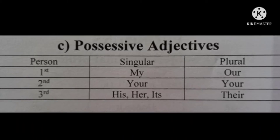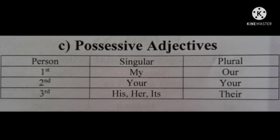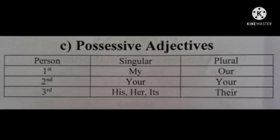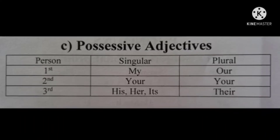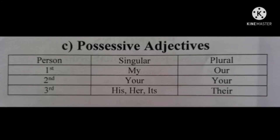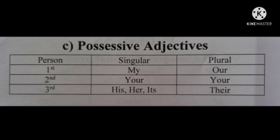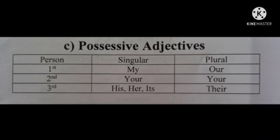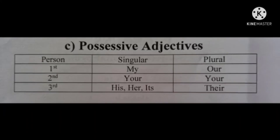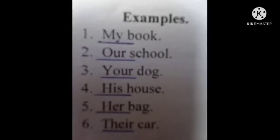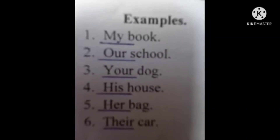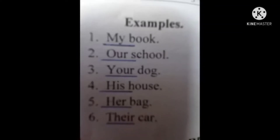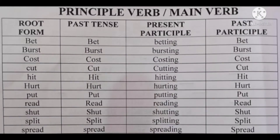The next important concept in basic grammar is possessive adjectives. First person singular: my; first person plural: our; second person singular and plural: your; third person singular: his, her, its; third person plural: their. For example: my book, our school, your dog, his house, her bag, their car.